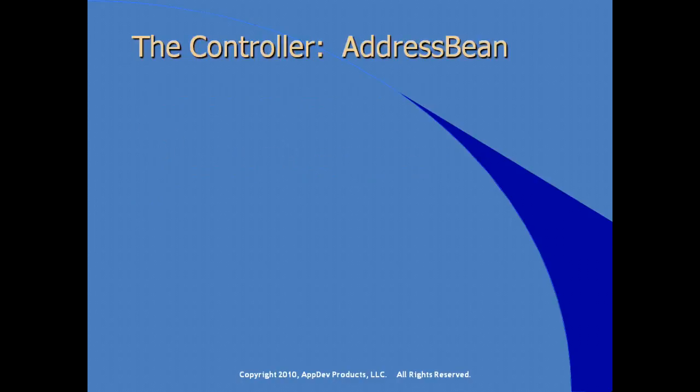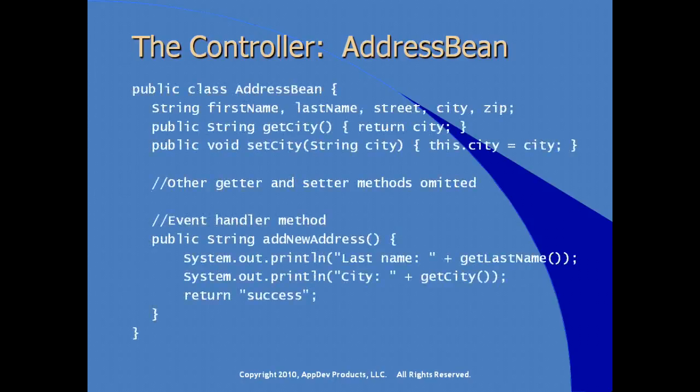The actual address bean is a piece of Java code with a couple of properties declared. We've omitted general getters and setters on this slide, but you would set up standard getters and setters like get city, set city for all properties. Notice a regular business method called addNewAddress — it prints out some information and returns the label 'success'. This is key because the navigational flow, which JSF extended from the Struts framework, is driven by these string return values.